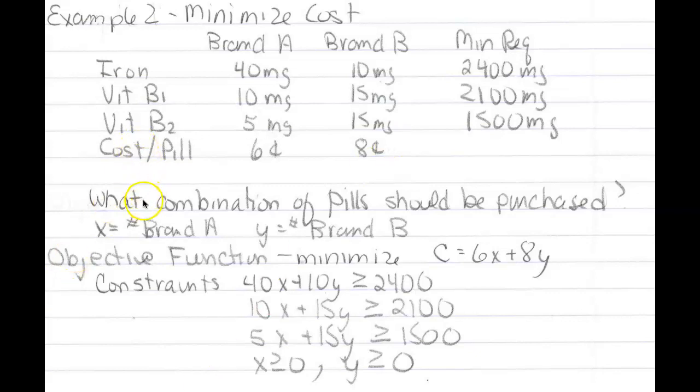We want to know what combination of pills should be purchased to minimize our cost. So our objective function, we're going to minimize cost. If X is the number of brand A pills and Y is the number of brand B pills, then cost is 6X plus 8Y.